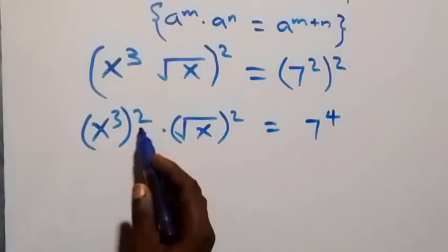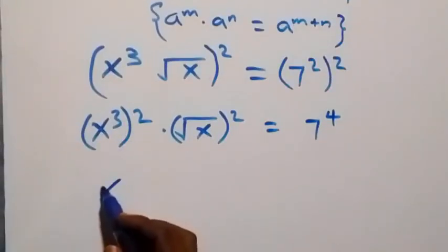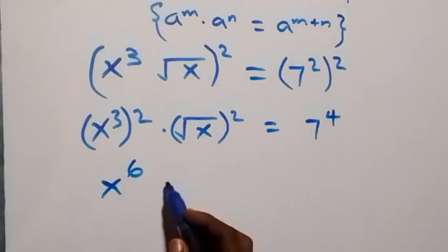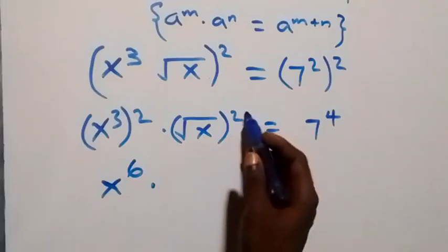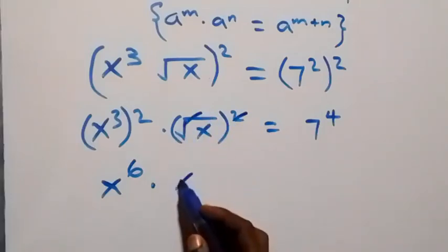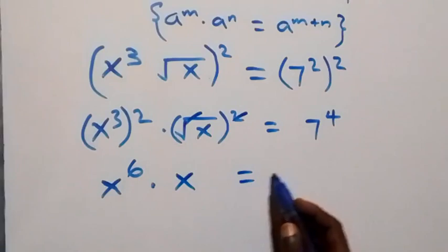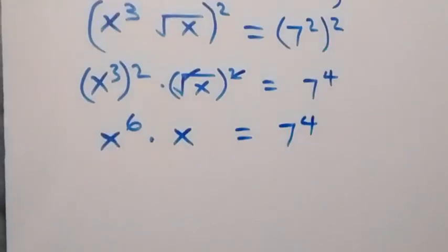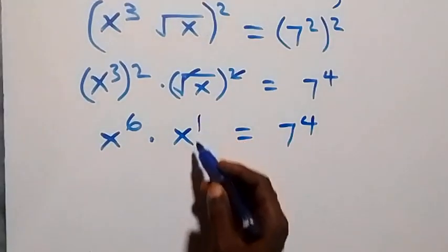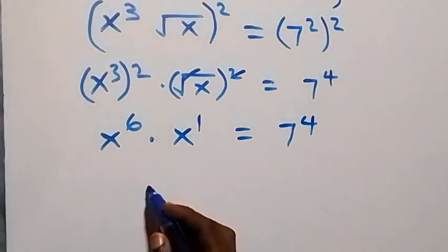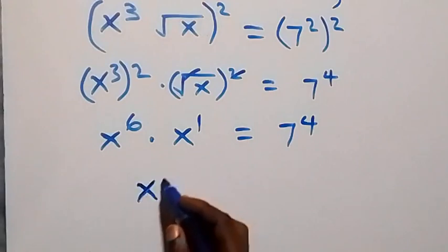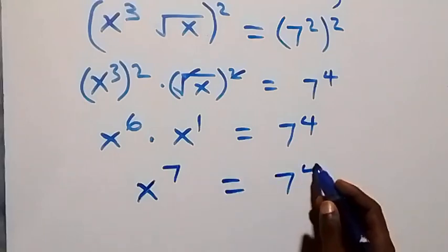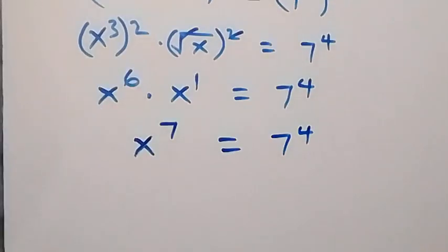This power multiplies and we have x raised to power six, then times here square cancels square roots, we have x equals to seven raised to power four. Also here this is x raised to power one, and this becomes x raised to power seven equals to seven raised to power four.